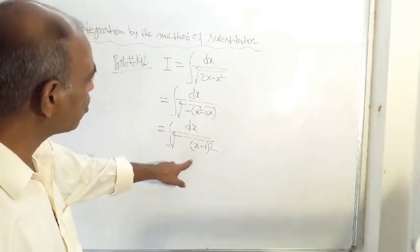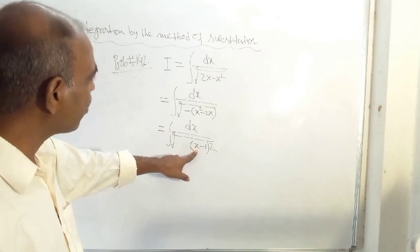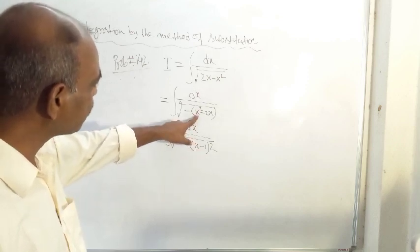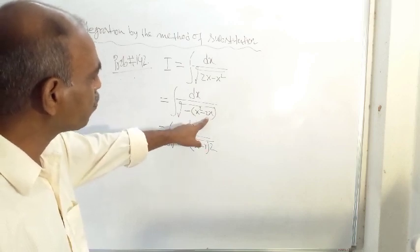Are these the same or not? No, they are not the same. If you expand this you will get x square. So x square is present, then minus 2x is present, then plus one, but plus one is not present.